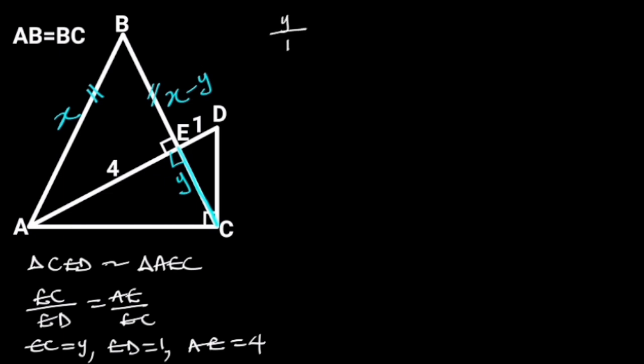Y over 1 is equal to 4 over Y. By cross-multiplication, we will have Y times Y is equal to 1 times 4, which is equal to Y squared is equal to 4. Taking the square root of both sides will give us Y is equal to 2.